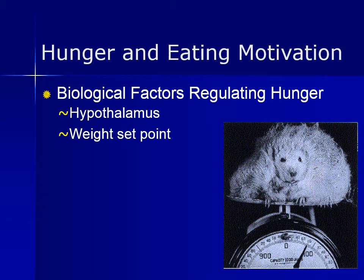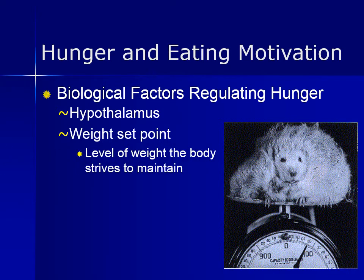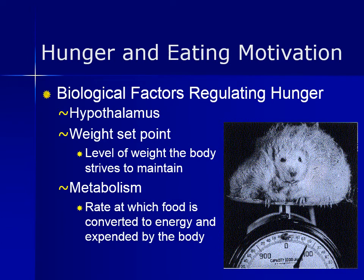The weight set point theory states that the hypothalamus wants to maintain a certain optimum body weight. When we drop below that weight, the hypothalamus tells us to eat and lowers our metabolic rate. It tells us to stop eating when the weight set point is reached and raises our metabolic rate to burn excess food. There are also psychological factors in hunger — some of us eat even though our hypothalamus is not sending us any cues. If you are motivated to eat by cues such as stress, smells, or food sitting right in front of you, that would be an example of psychological factors, such as eating a gallon of ice cream after a bad breakup or seeking comfort food after a hard day at work.